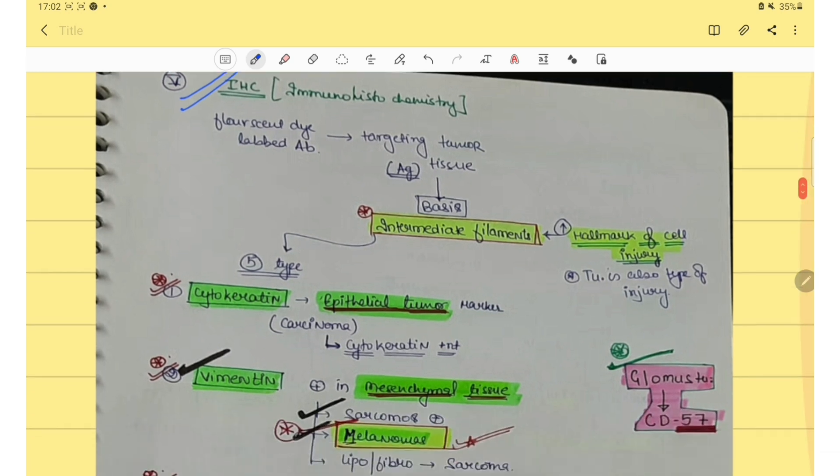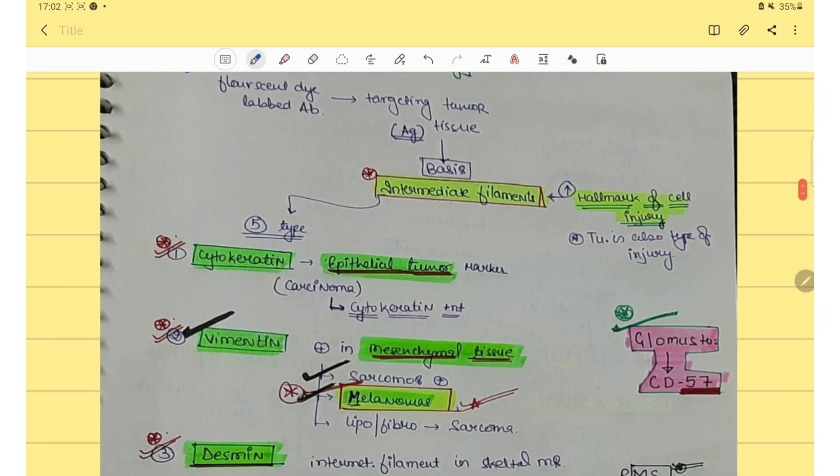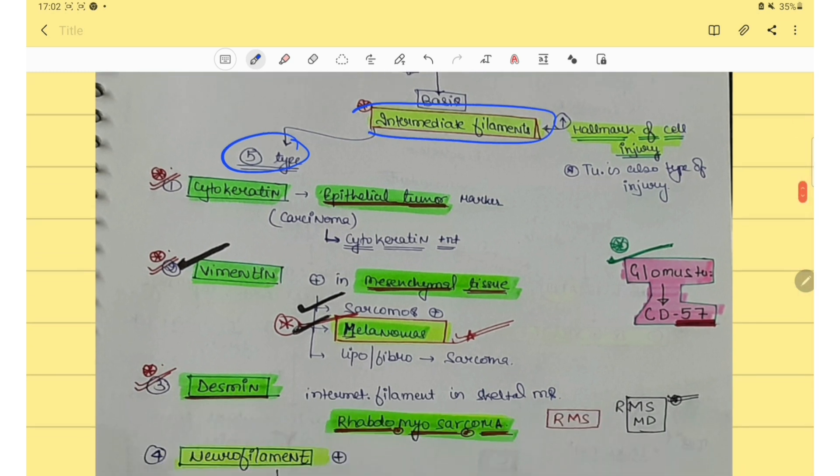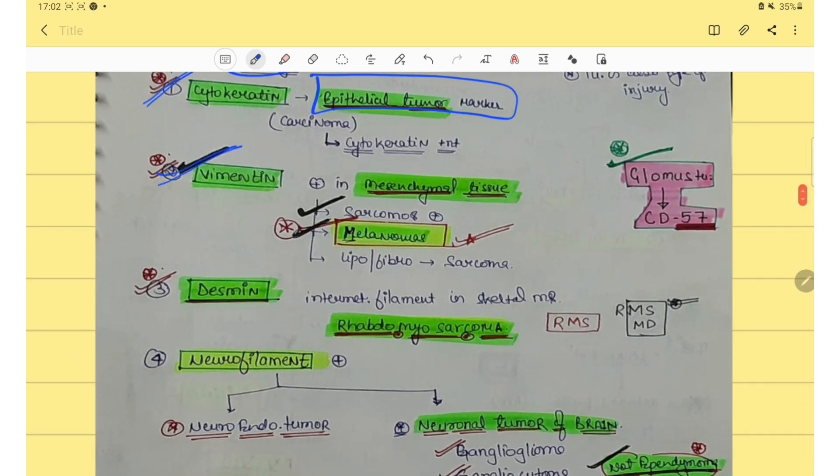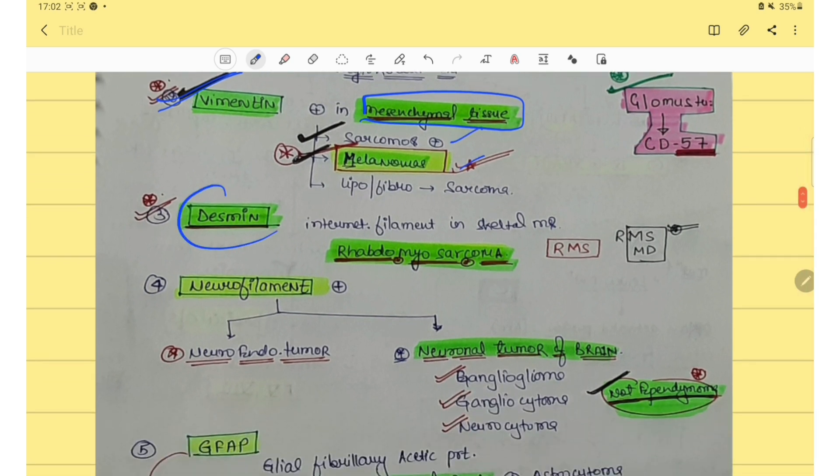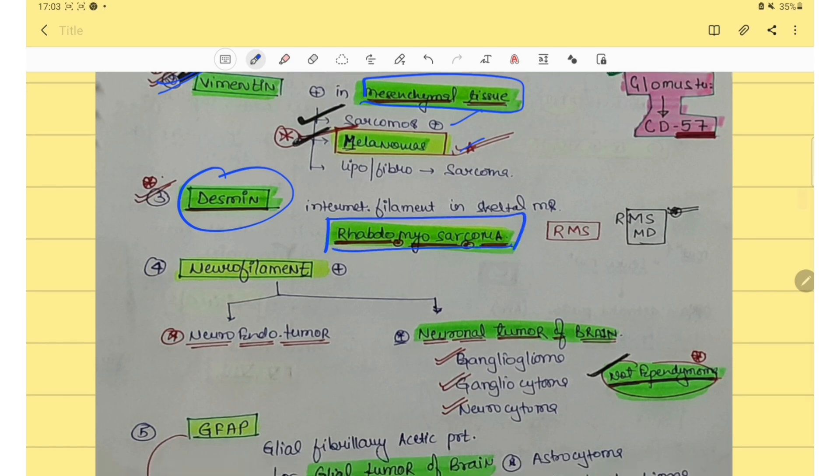Then immunohistochemistry, this is also very very important. In this we should know about the 5 types of intermediate filaments. Cytokeratin is positive in epithelial tumor marker. Then vimentin is positive in mesenchymal sarcoma and melanoma. Then desmin, desmin is most important and it is positive in rhabdomyosarcoma.